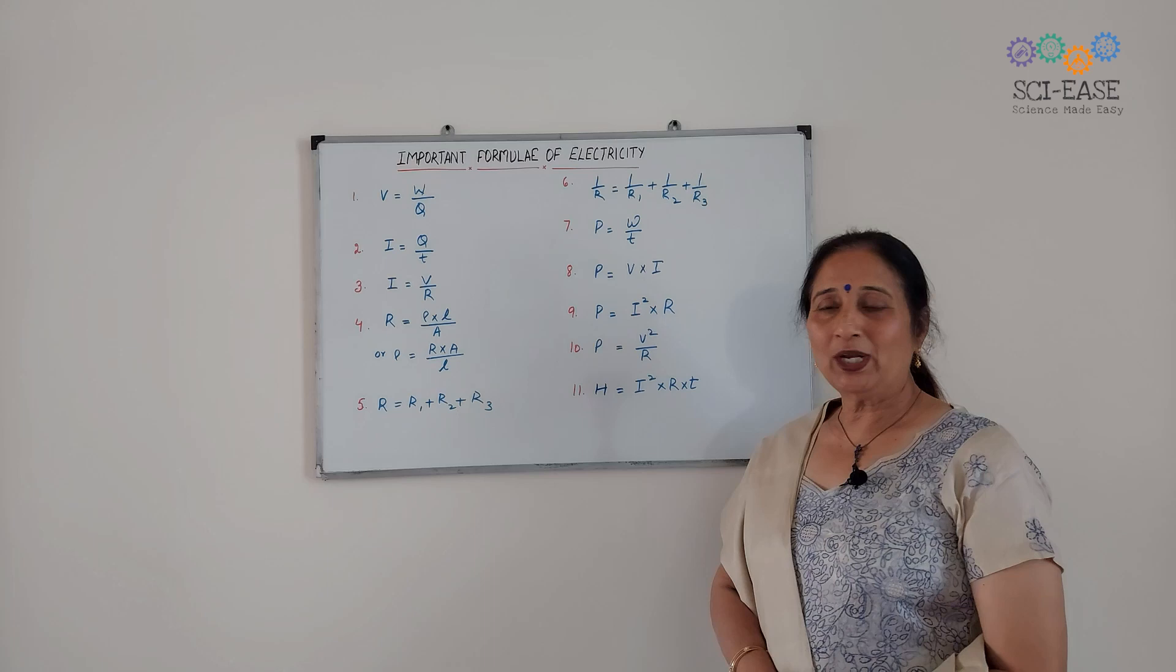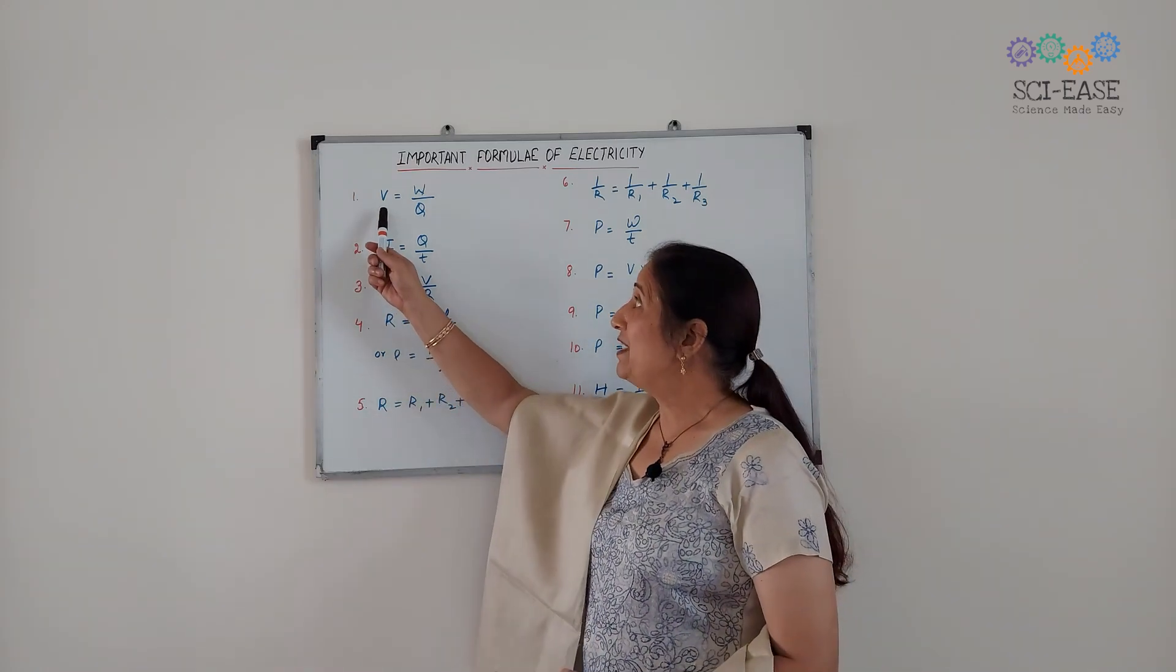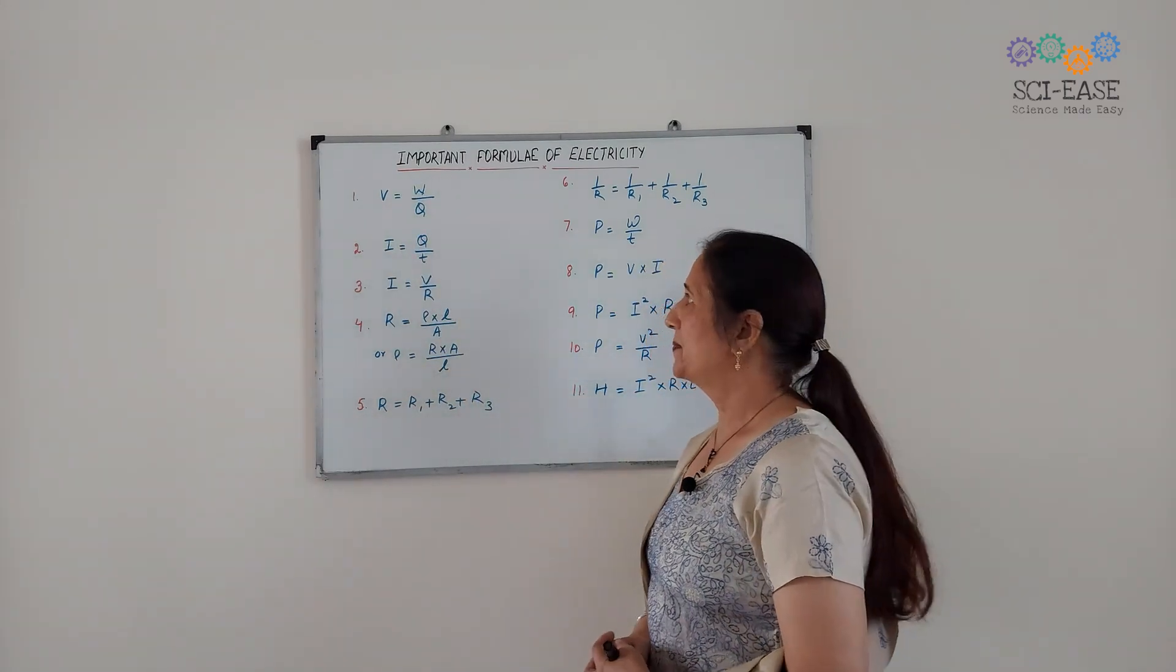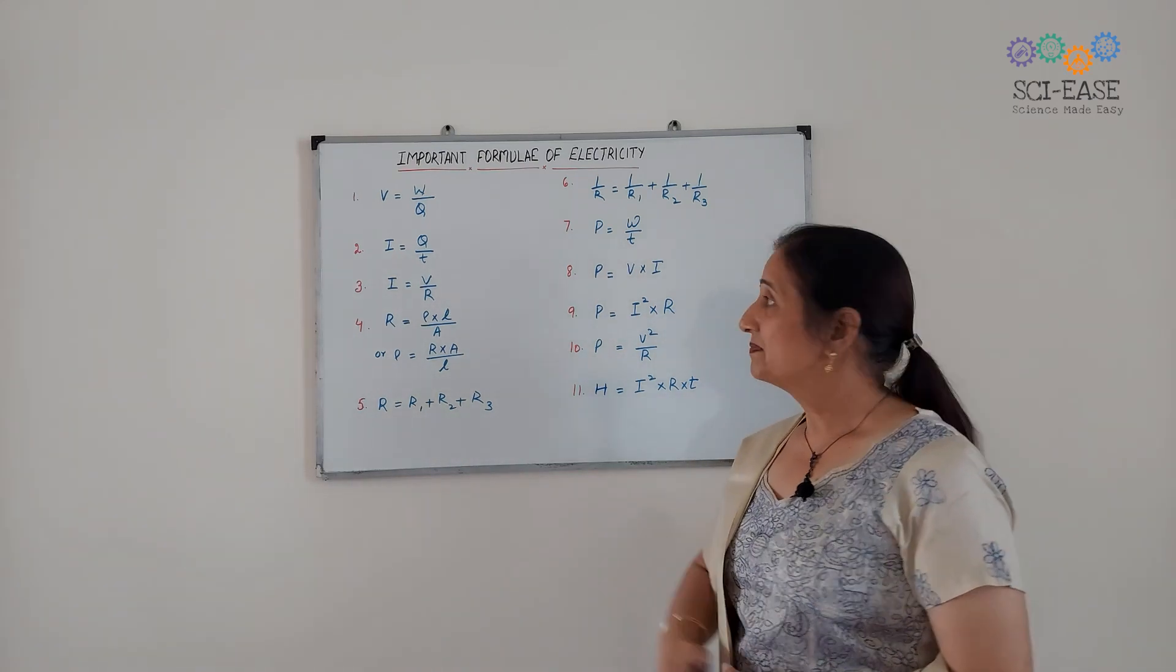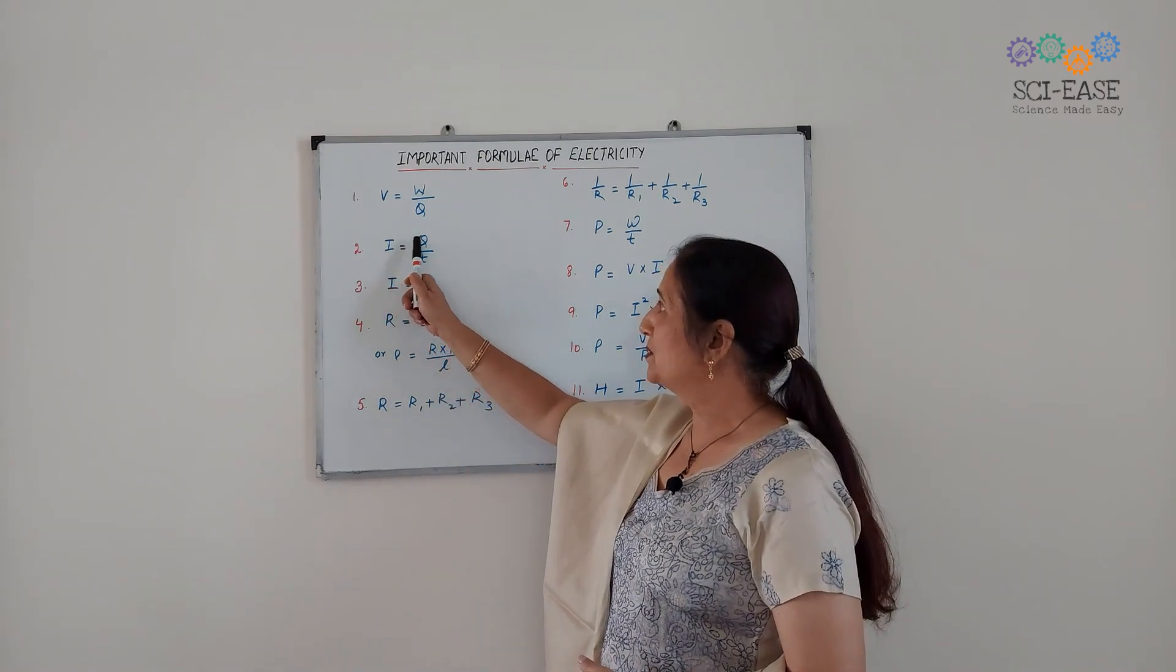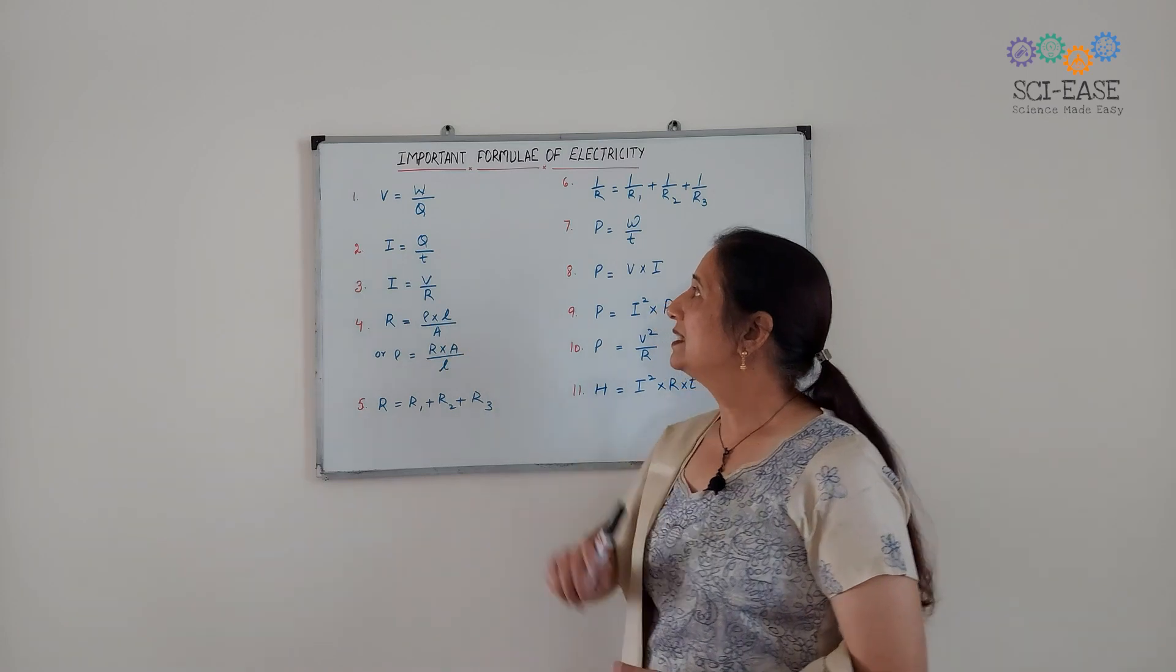The first formula is V equals W by Q. Second, I equals Q over T.